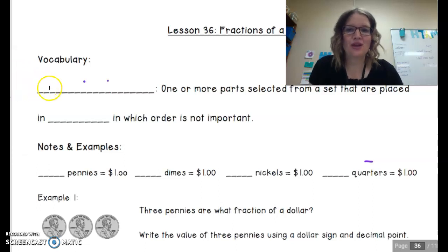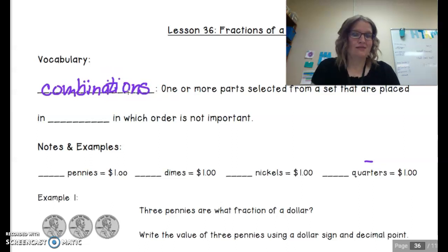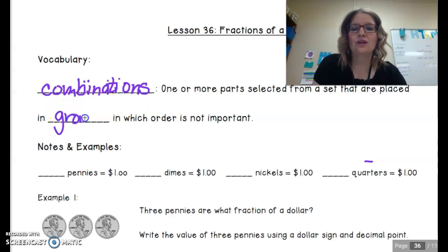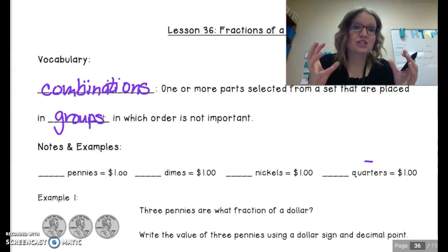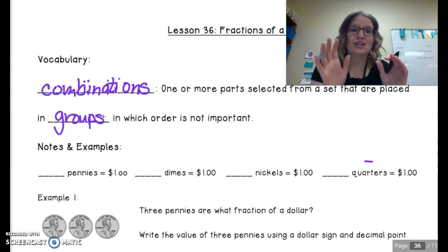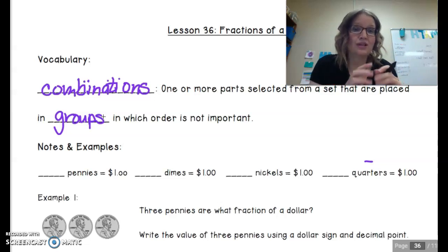Our first piece of vocabulary is the word combinations, and this has a little bit of a different meaning than what you may understand. A combination is one or more parts selected from a set that are placed in groups in which order is not important. Now think about numbers like a combination lock. In this situation, order is important, and so this is different than a combination lock.